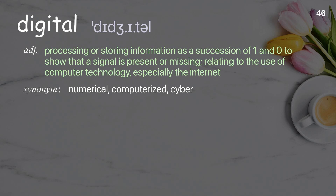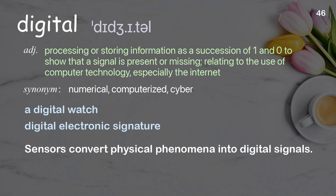Digital: Processing or storing information as a succession of ones and zeros to show that a signal is present or missing; relating to the use of computer technology, especially the Internet. Examples: A digital watch. Digital electronic signature. Sensors convert physical phenomena into digital signals.